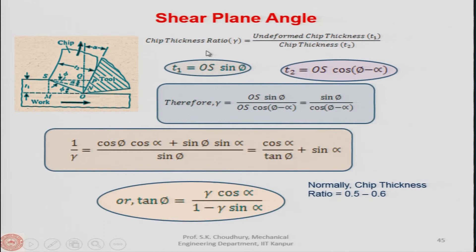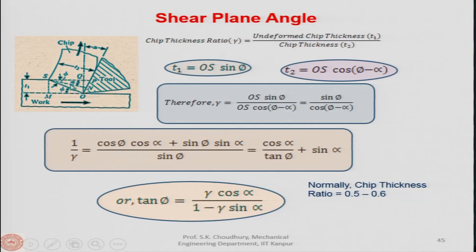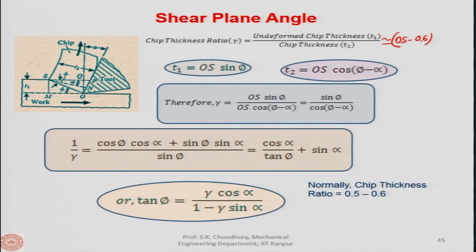The chip thickness ratio is r = T1/T2, where T1 is the uncut thickness and T2 is the chip thickness measured from the chip itself. In practice, this ratio is roughly 0.5 to 0.6, meaning the chip expands by 50–60% compared to the uncut thickness after plastic deformation along the shear plane.